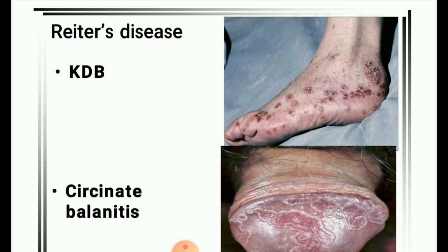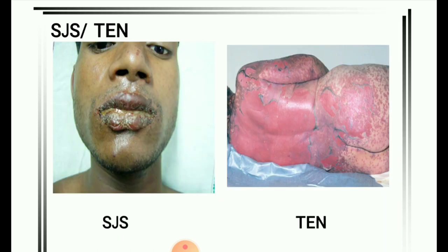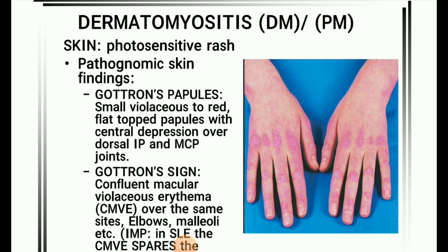Next image: Reiter's disease, also known as reactive arthritis. Key features include KDB and circinate balanitis. Next image: Stevens-Johnson syndrome (SJS) or toxic epidermal necrolysis (TEN).